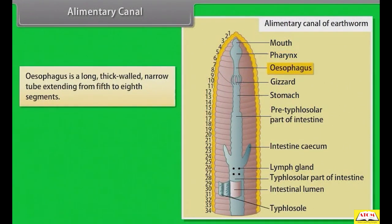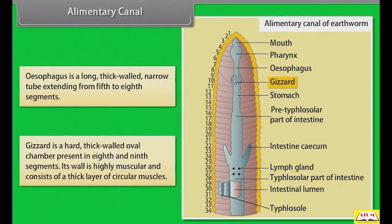The oesophagus is a long, thick-walled, narrow tube extending from the 5th to 8th segment. The gizzard is a hard, thick-walled, oval chamber present in the 8th and 9th segments. Its wall is highly muscular and consists of a thick layer of circular muscles.